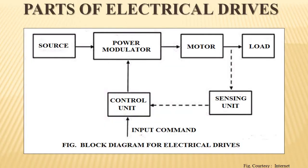Let us see the parts or block diagram of electrical drives. A source of electrical supply is connected to a power modulator, which is connected to a motor, and the motor is connected to the load. In between the motor and load there is a sensing unit which sends a signal to the control unit. The control unit gets another signal as an input command, and its output is supplied to the power modulator.